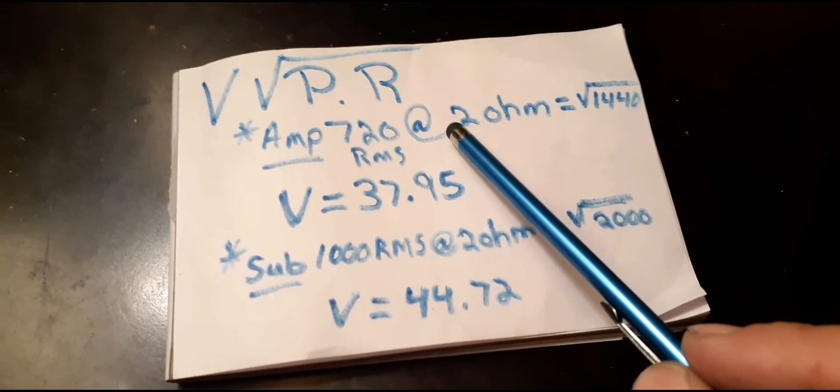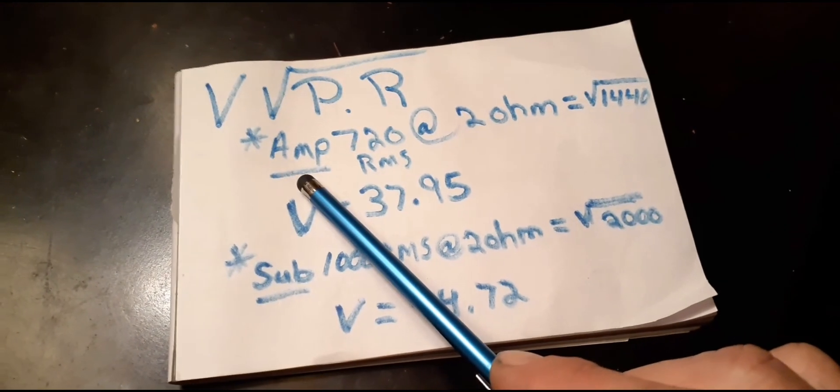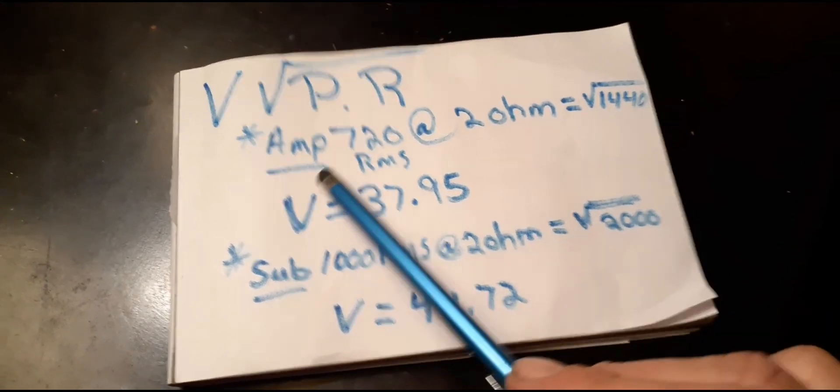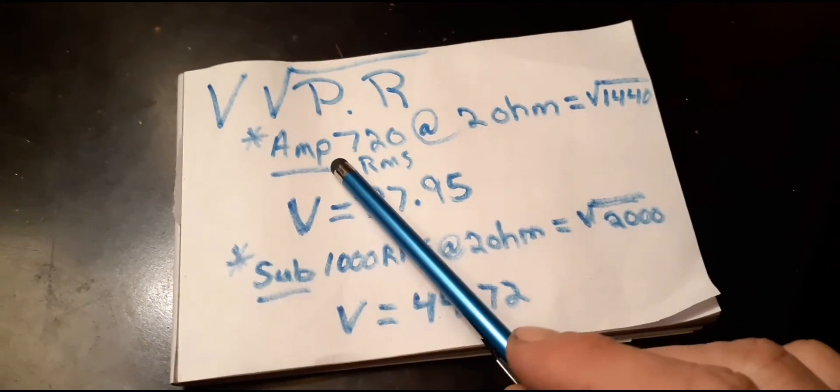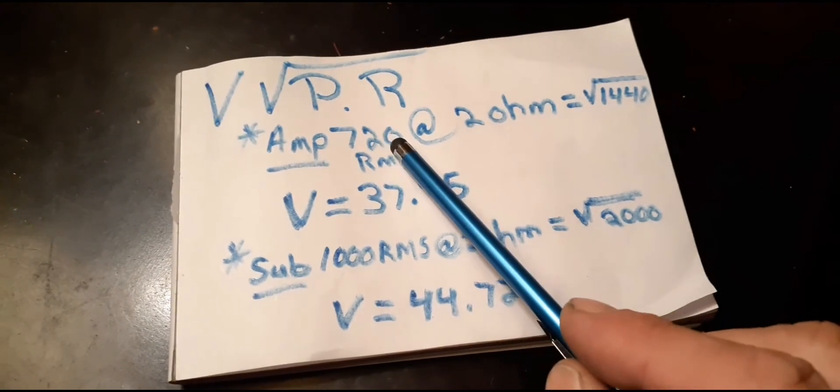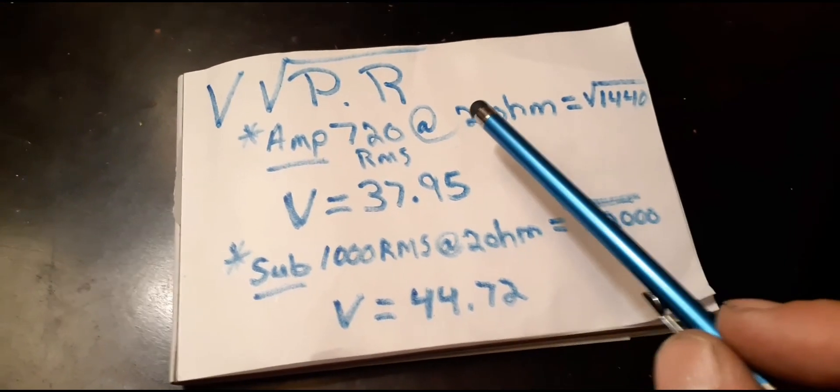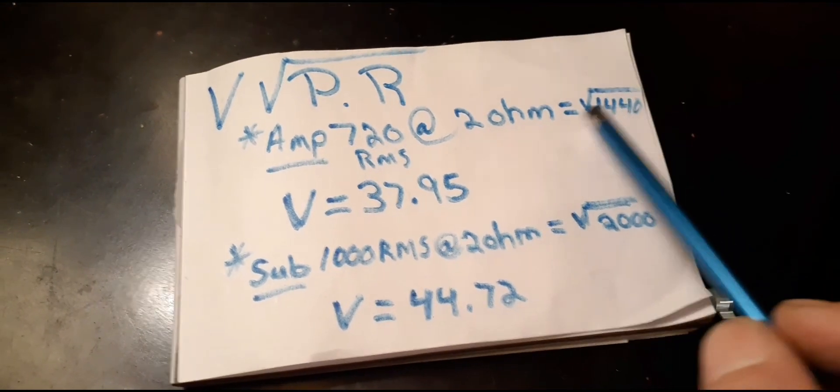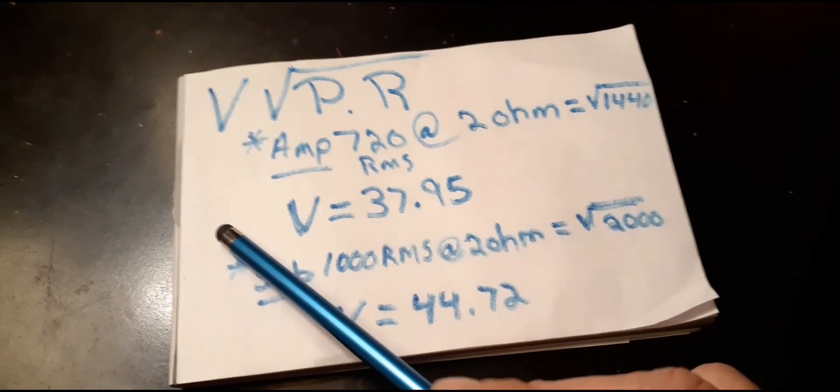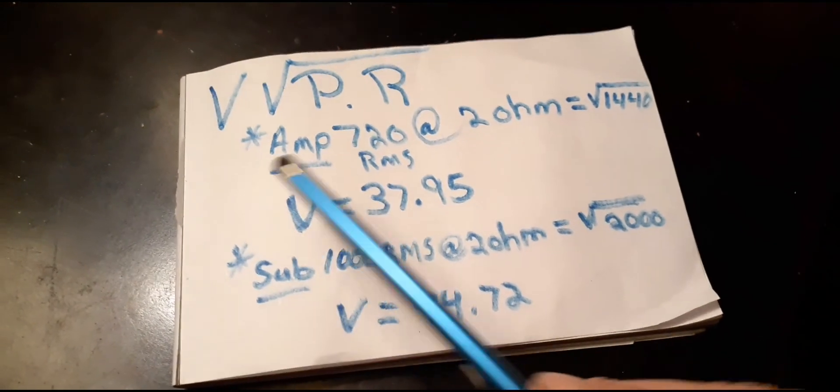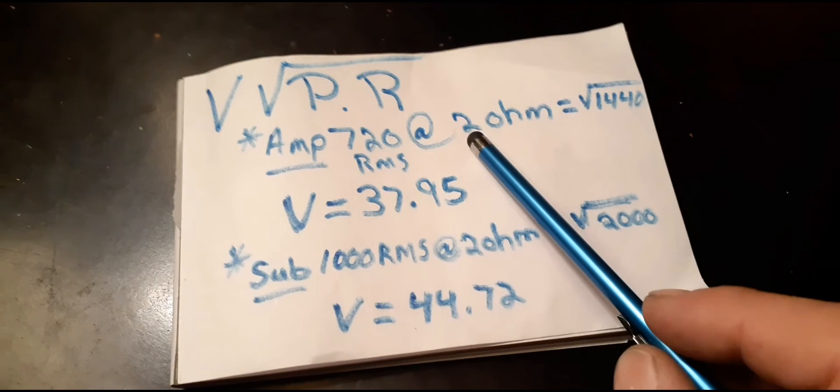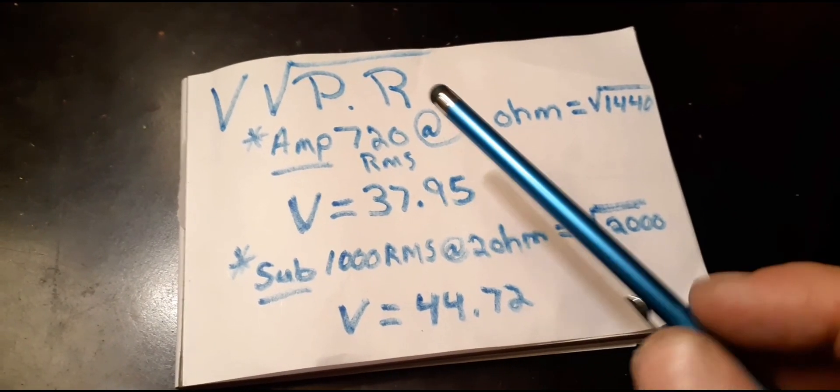I use the amp rating at two ohm. At one ohm this amp is rated 1020 watts, so I would have a whole different number here, but I'd have to have another sub. I only got one sub, so that's why I got it at two ohms.